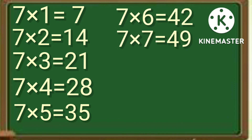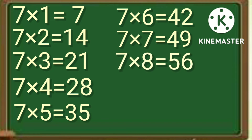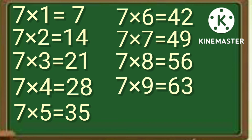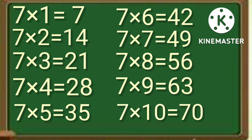7 times 7 is 49. 7 times 8 is 56. 7 times 9 is 63. 7 times 10 is 70.